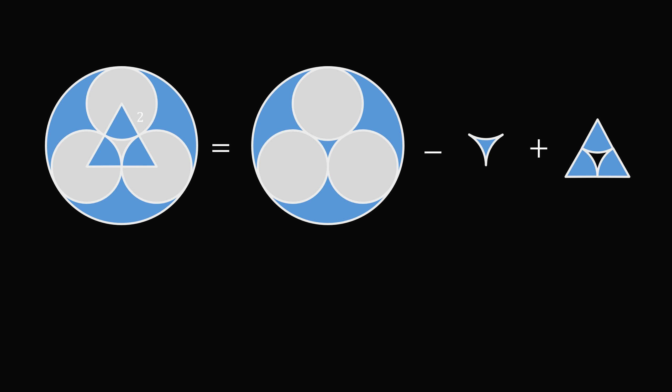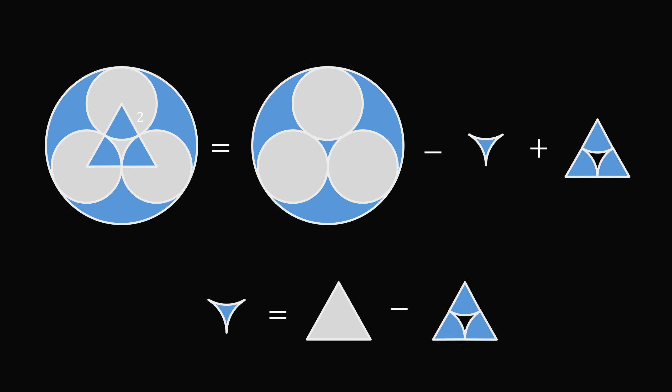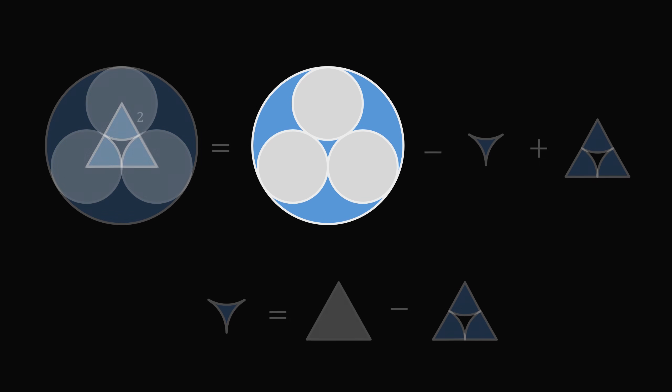We can further break down the area in between the three small circles. This will be equal to the area of the equilateral triangle formed between the three small circle centers, and then we subtract out the areas of the three circular sectors. So let's calculate this first area.